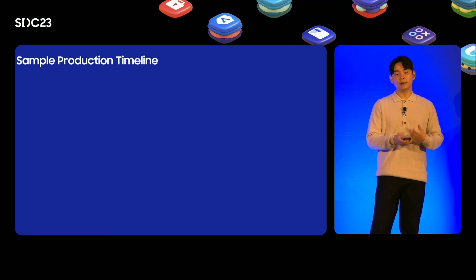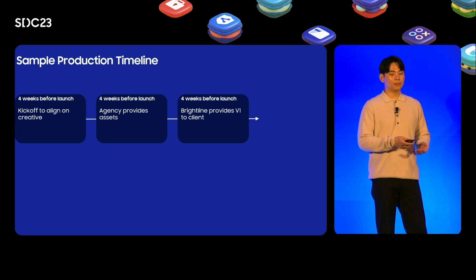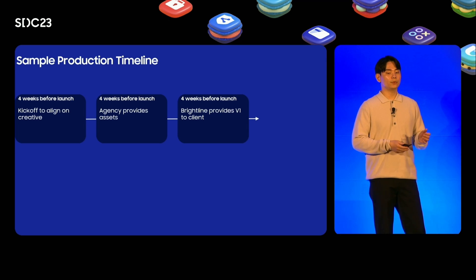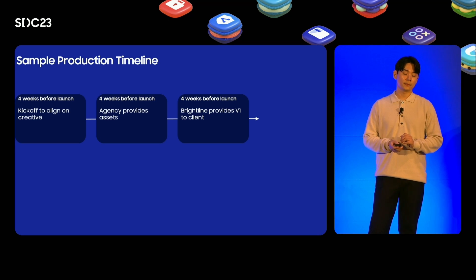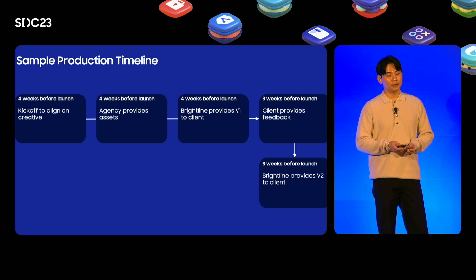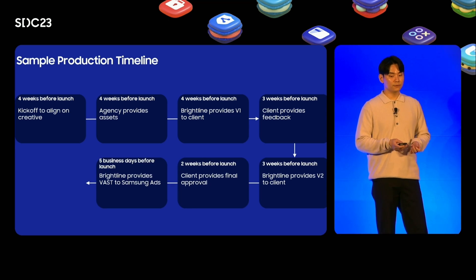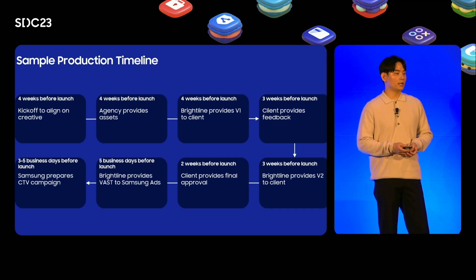The process of making the ad will look like the following. Four weeks before launch, kickoff begins with aligning the creative and providing access to create version 1 for the client. Then, three weeks before launch, the client will provide feedback to create version 2. Next, when the client approves, Brightline will provide the VAST to Samsung ads. Lastly, three to five business days before launch, Samsung will prepare the campaign.